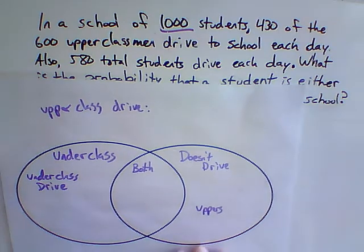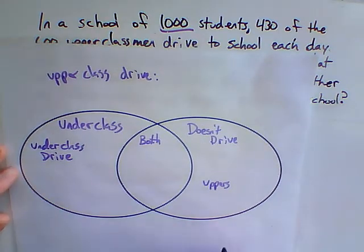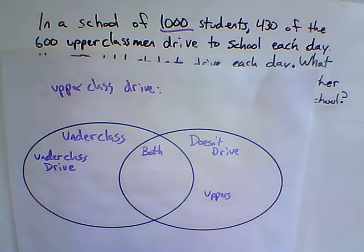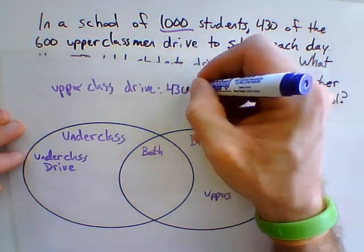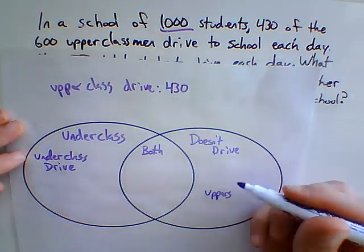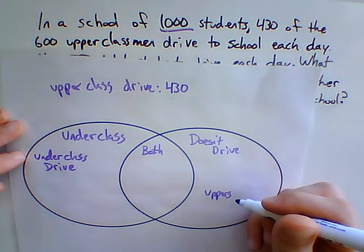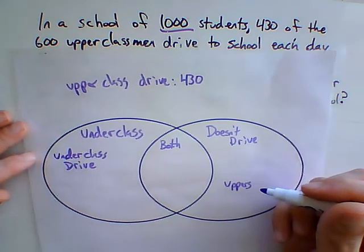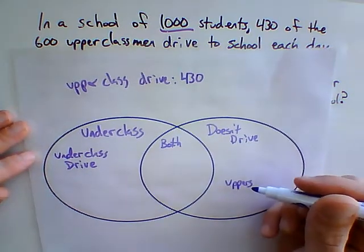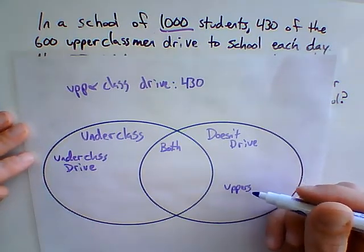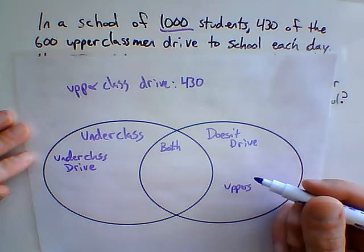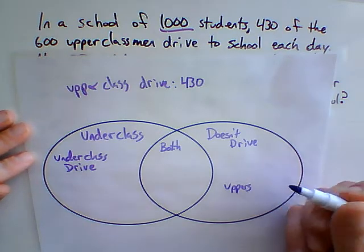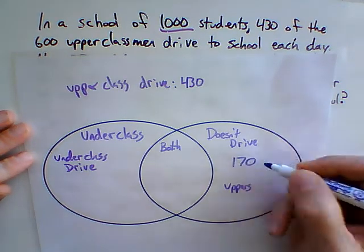Now let's start filling this in. In a school of 1,000 students, 430 of the 600 upperclassmen drive to school. So 430 upperclassmen drive. I know that there's 600 upperclassmen. 430 of them drive, which means 170 of them do not.